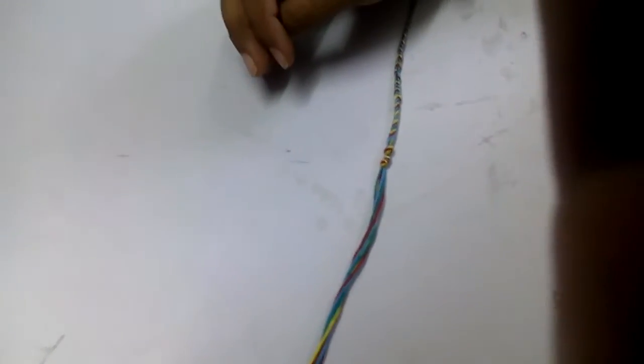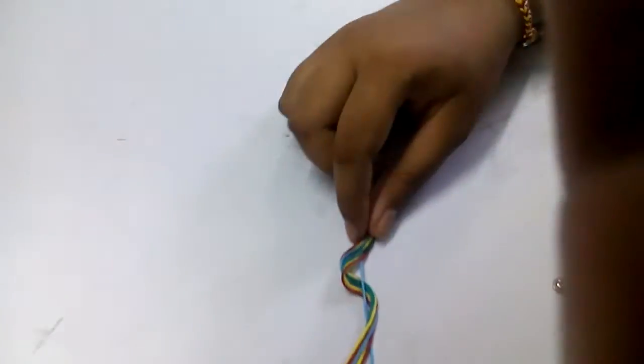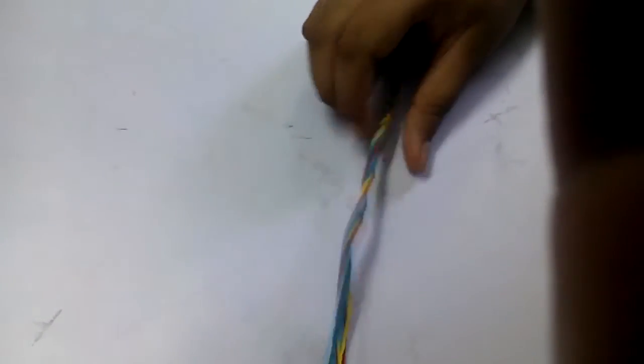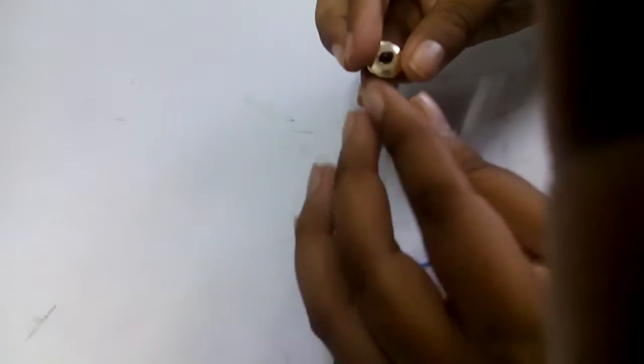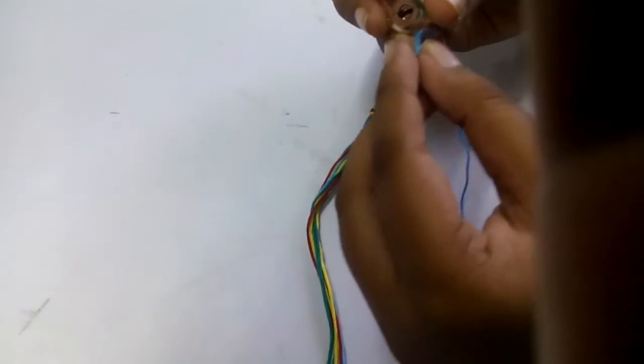Now take a button and a thread. Make sure all the threads don't go through it - take only one thread. Pass the thread through the holes of the button.